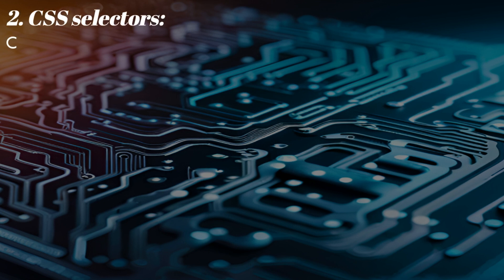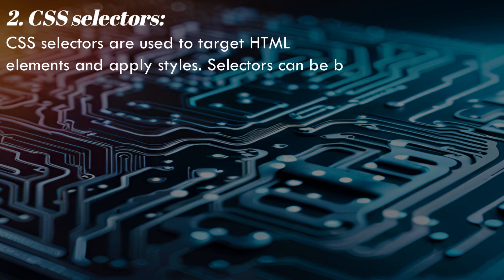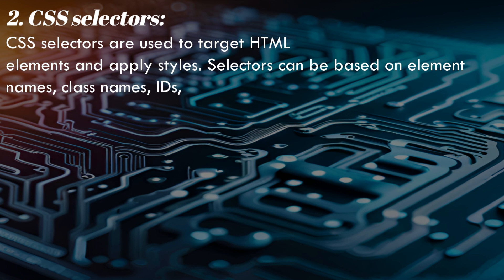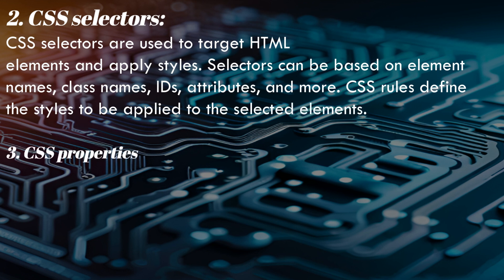2. CSS Selectors — CSS selectors are used to target HTML elements and apply styles. Selectors can be based on element names, class names, IDs, attributes, and more. CSS rules define the styles to be applied to the selected elements.